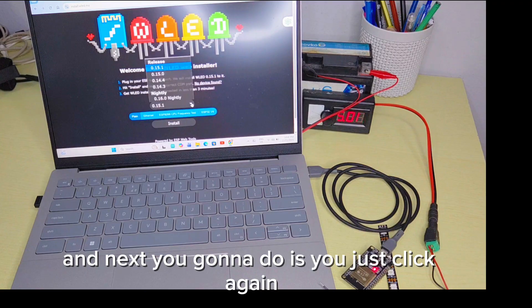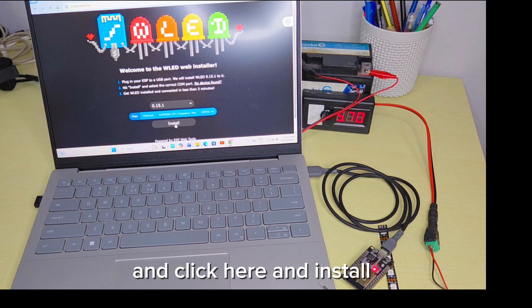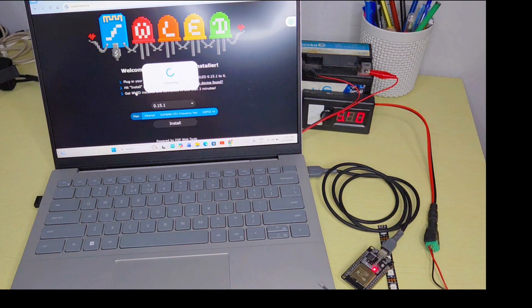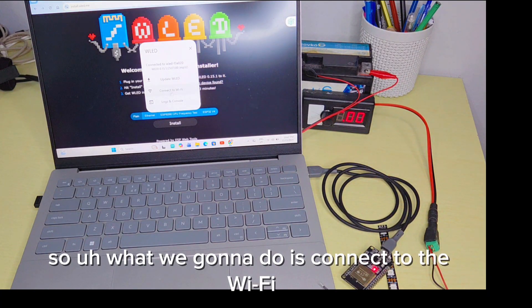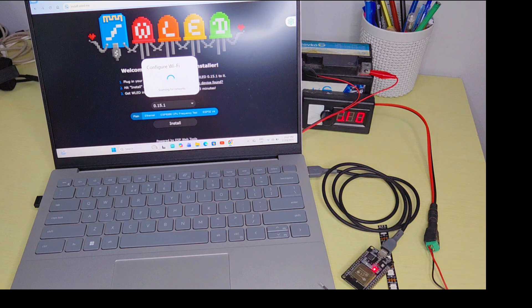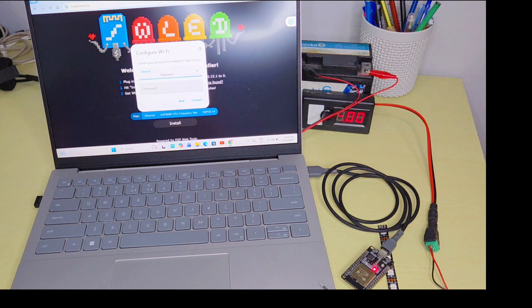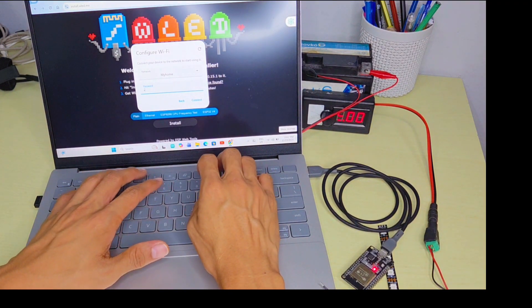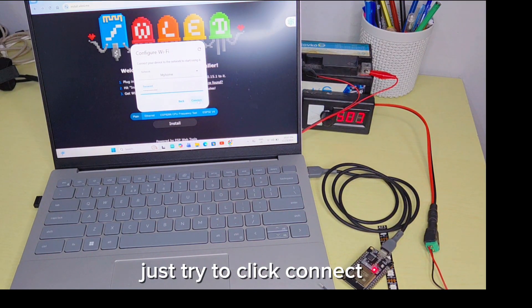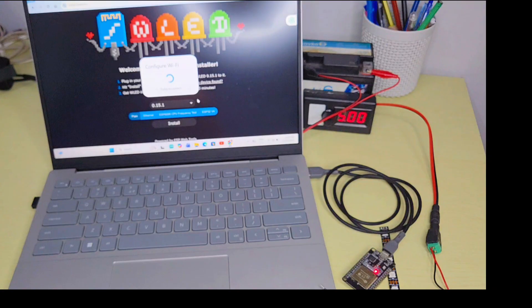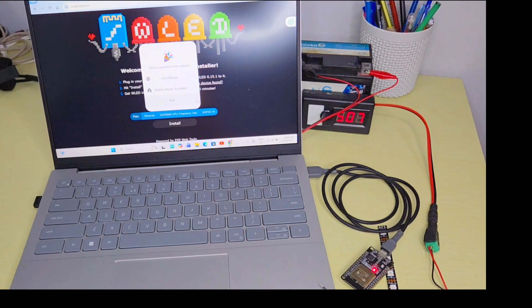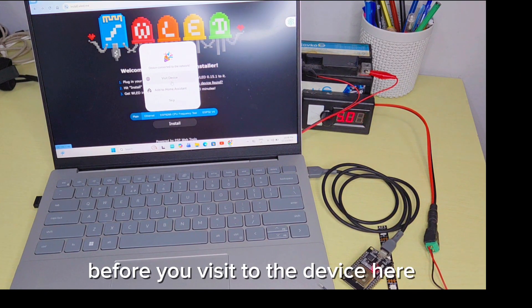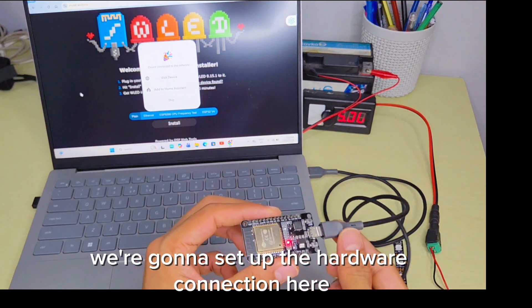Next you're going to click again and connect. You will see here to connect to the Wi-Fi. You need to provide your Wi-Fi password and click connect. Before you visit the device, we're going to set up the hardware connection.